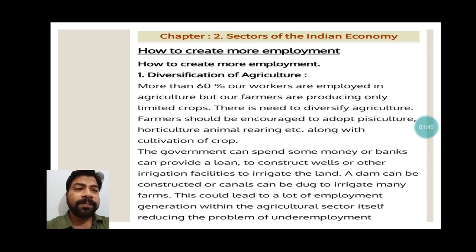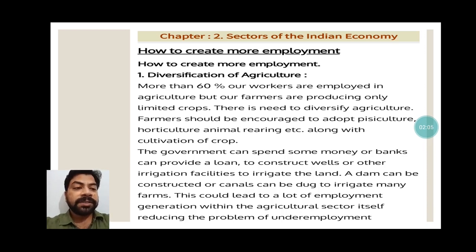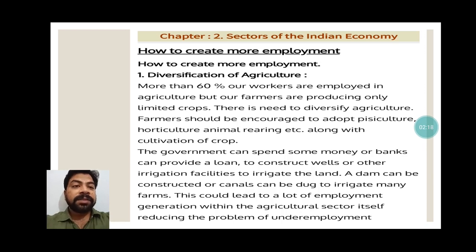Diversification of agriculture will also open employment for the unemployed. The government can spend money or banks can provide loans to construct wells or other irrigation facilities. Dams can be constructed or canals can be dug to irrigate many farms. This could lead to a lot of employment generation within the agricultural sector, thereby reducing the problem of underemployment. Underemployment is similar to disguised unemployment.